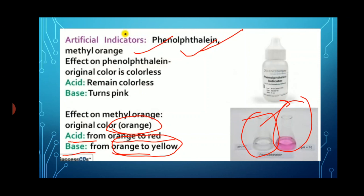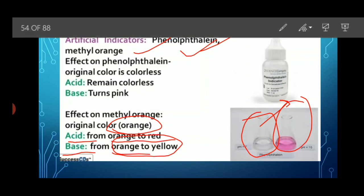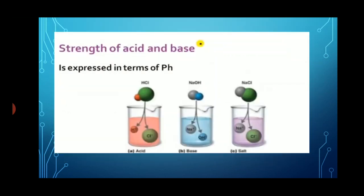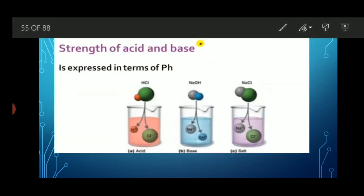The third type is artificial indicators — those indicators which we prepare in the laboratory — like phenolphthalein and methyl orange. One of the other important indicators is pH. pH is another way to indicate the nature of a solution.